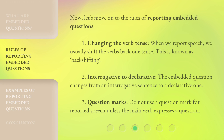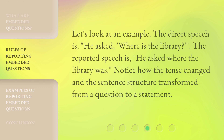Now, let's move on to the rules of reporting embedded questions. Rule 1: Changing the Verb Tense — when we report speech, we usually shift the verbs back one tense. This is known as backshifting. Rule 2: Interrogative to Declarative — the embedded question changes from an interrogative sentence to a declarative one. Rule 3: Question Marks — do not use a question mark for reported speech unless the main verb expresses a question. For example, the direct speech 'He asked, where is the library?' becomes the reported speech 'He asked where the library was.' Notice how the tense changed and the sentence structure transformed from a question to a statement.